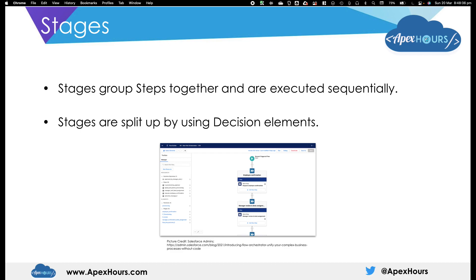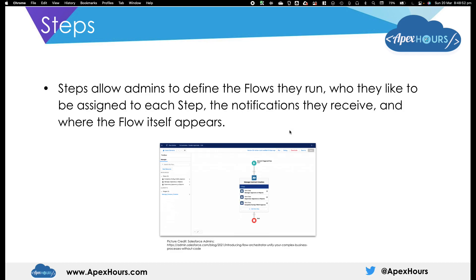Stages group steps together. In this screenshot you can see one stage and another stage under it. You can split stages up using decision elements. Steps allow admins to define the flows they run, who they'd like assigned to each step, the notifications they receive, and where the flow itself appears. Here's a stage that contains three steps.